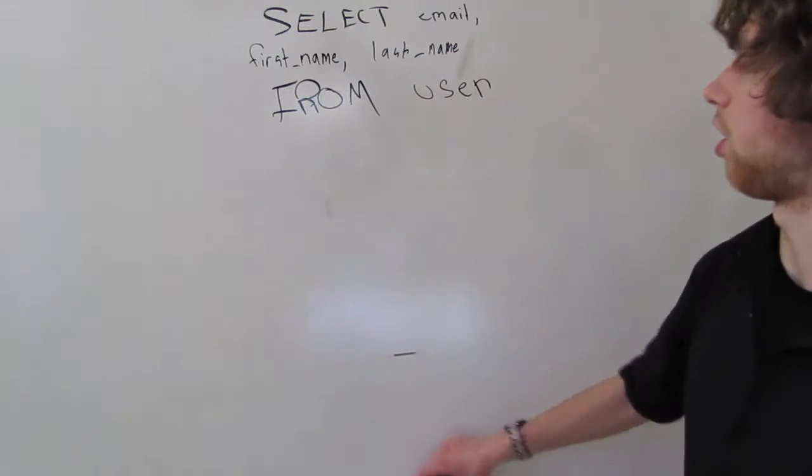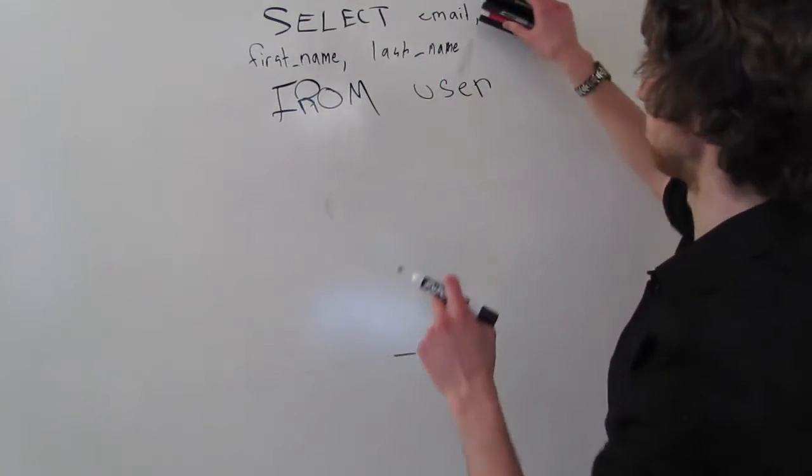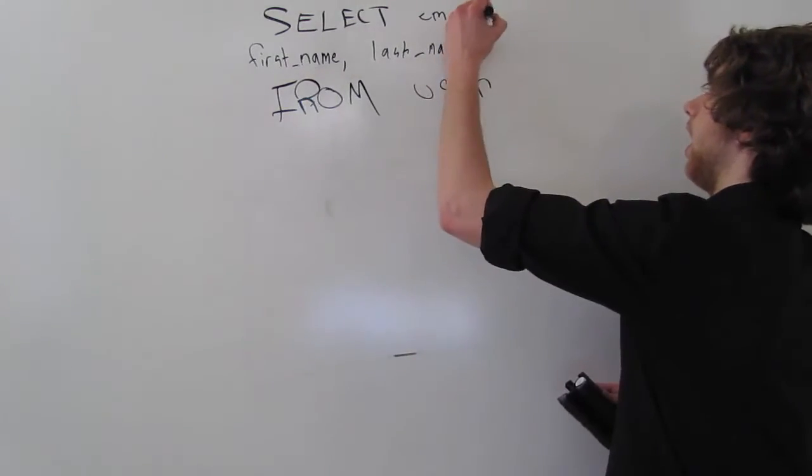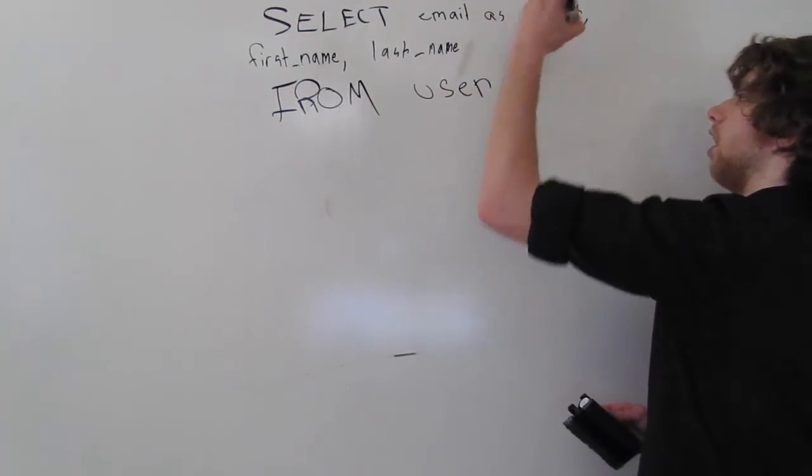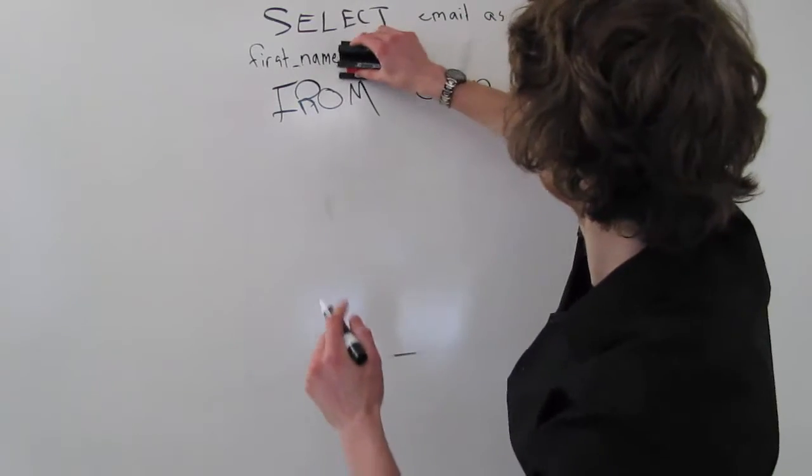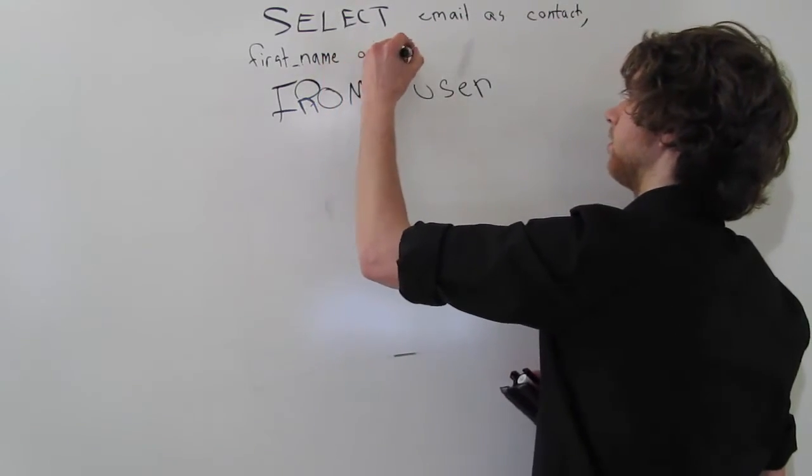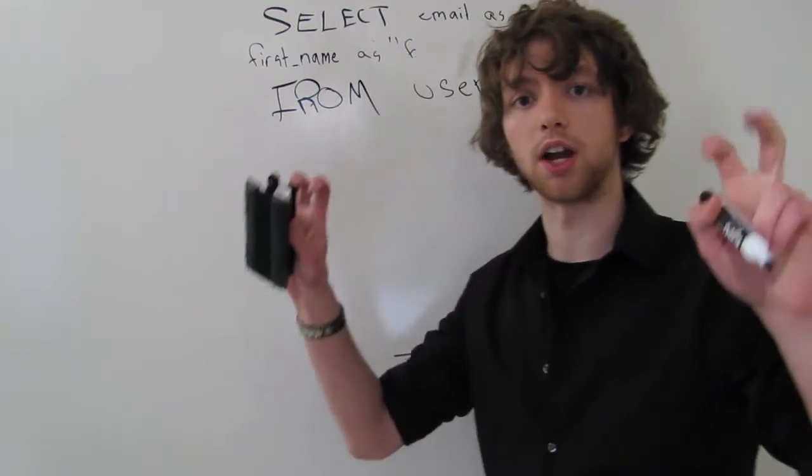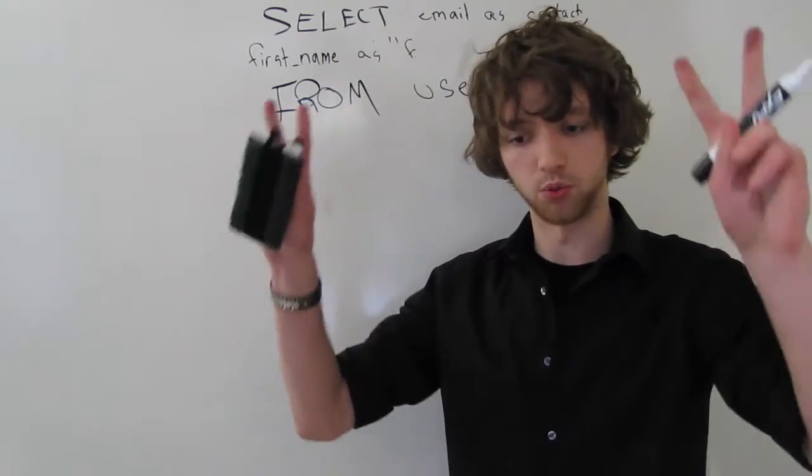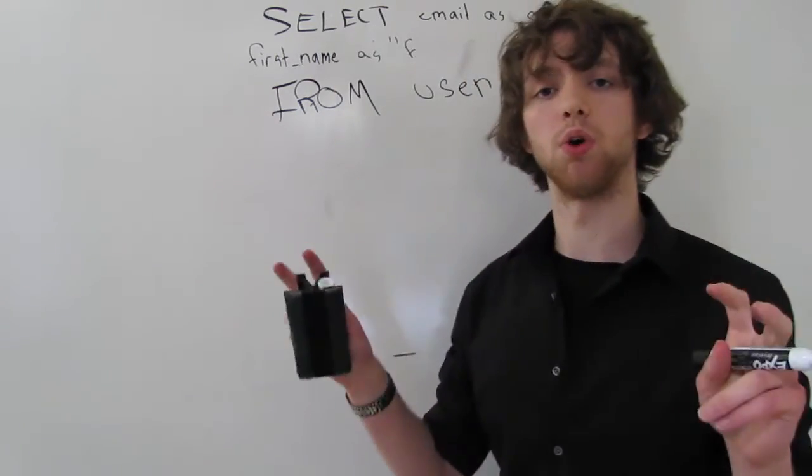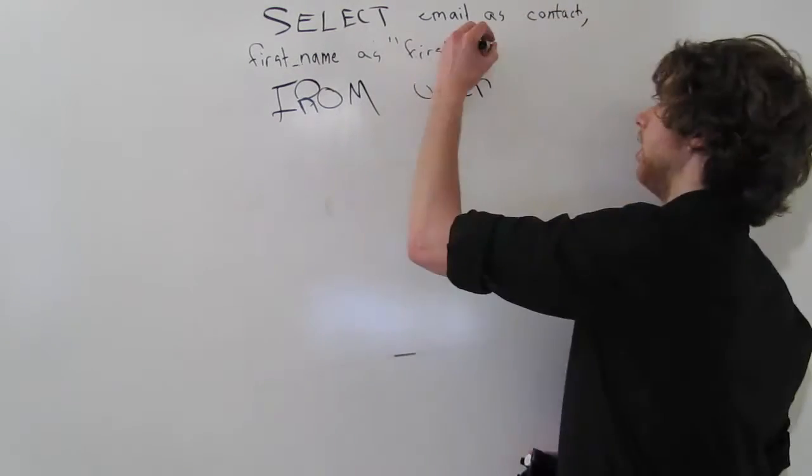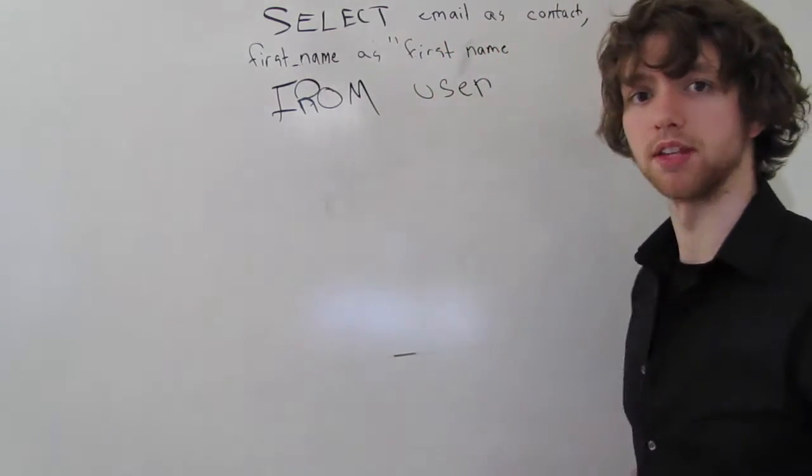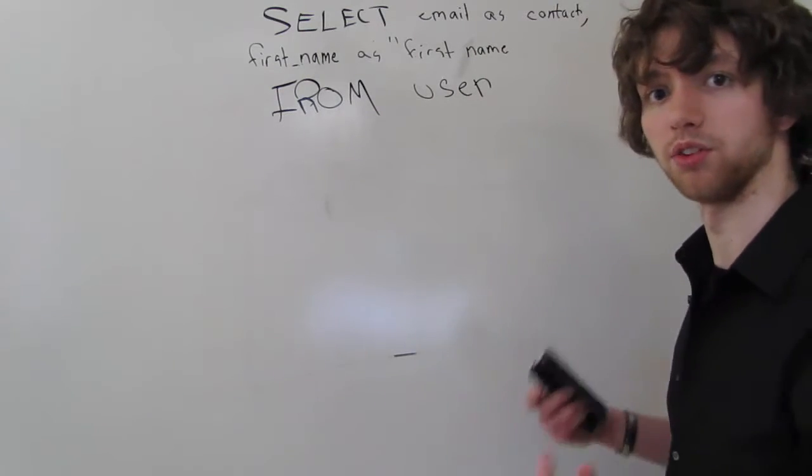Except you put it right after the column. So you can say, select email as contact, comma, first name as, and then you put in quotes. You've got to quote it. That's because you're telling it this is what you want it to be. You want to put it in quotes, so that way it's understood to be a string. You can see here I put that space there, and without the quotes it can just cause a problem.